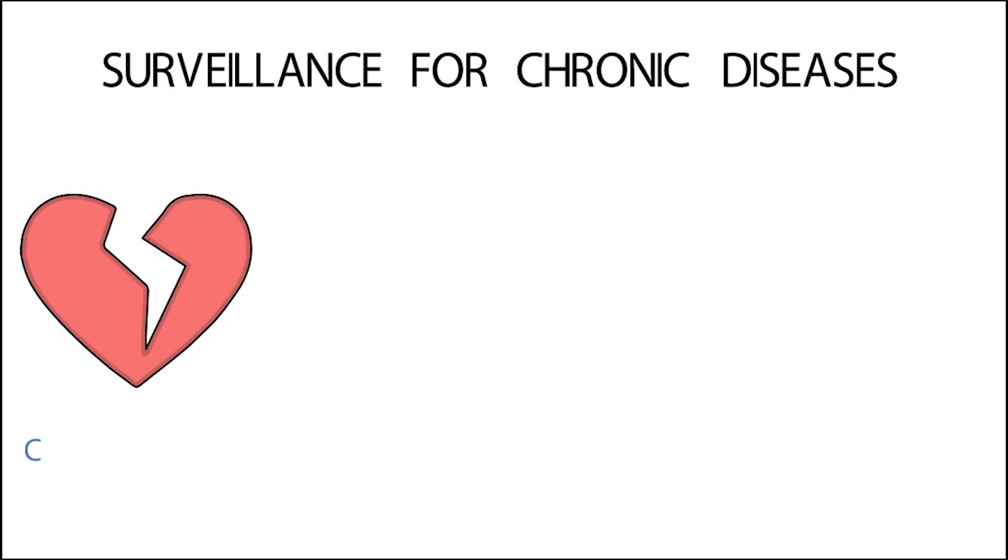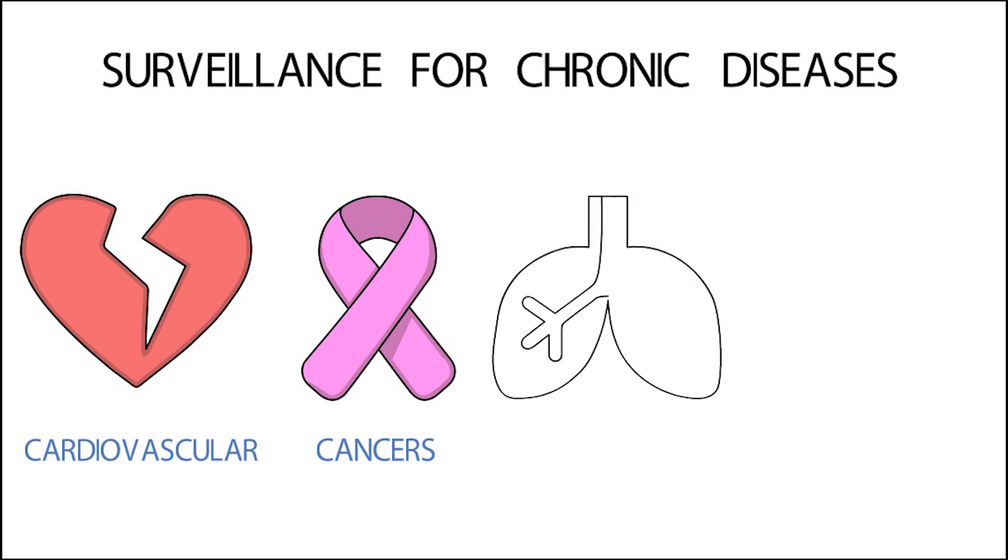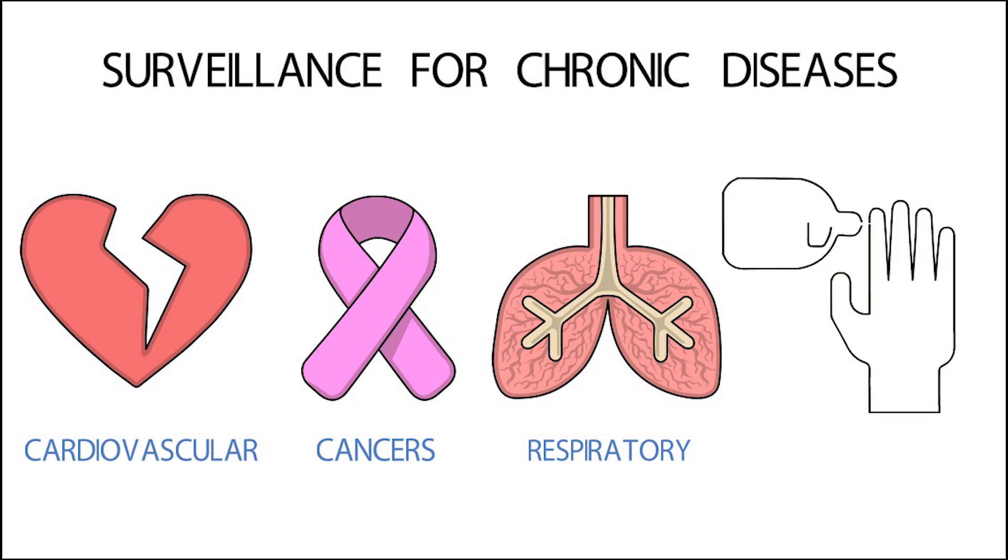Public health surveillance is conducted for many conditions, including for a group of diseases collectively known as chronic diseases. Chronic diseases are characterized as human health conditions that are long-lasting in their effects and generally slow in their progression. The four main types of chronic diseases are cardiovascular diseases like heart attacks and stroke, cancers, chronic respiratory diseases such as chronic obstructed pulmonary disease and asthma, and diabetes.